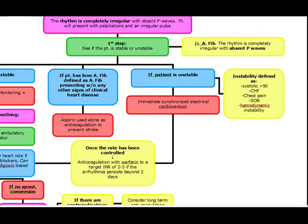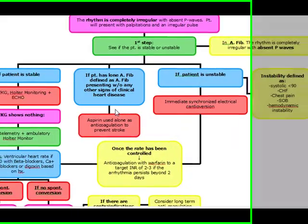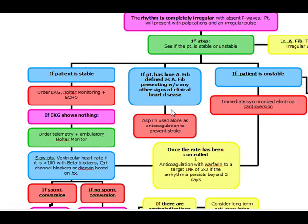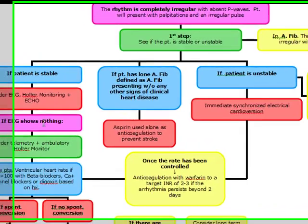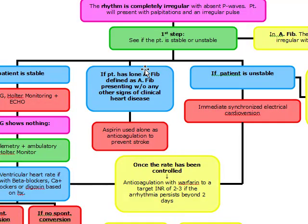What is lone AFib? Lone AFib is defined as AFib presenting without any other signs of heart disease. If you have a patient with lone AFib, all you're going to do is aspirin as anticoagulation to prevent stroke. That's the stable patient with AFib.